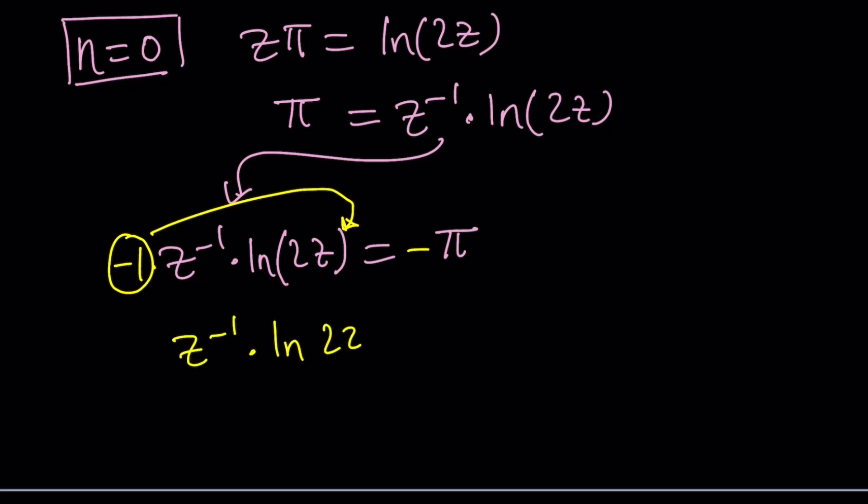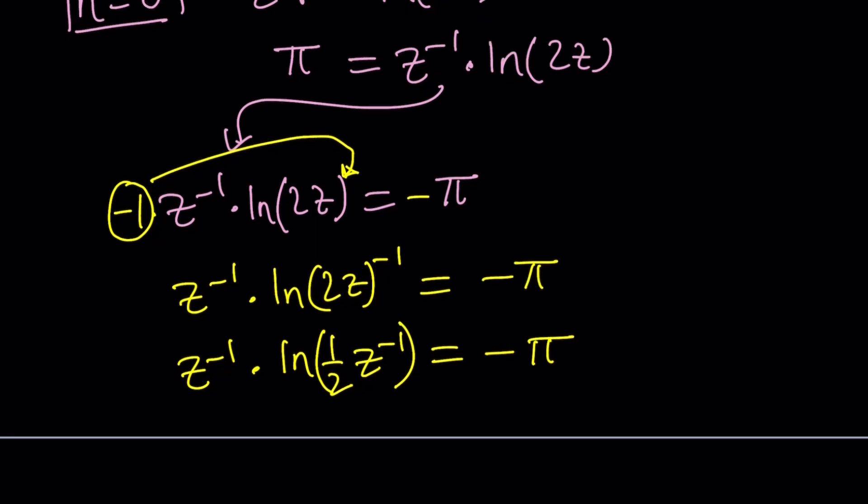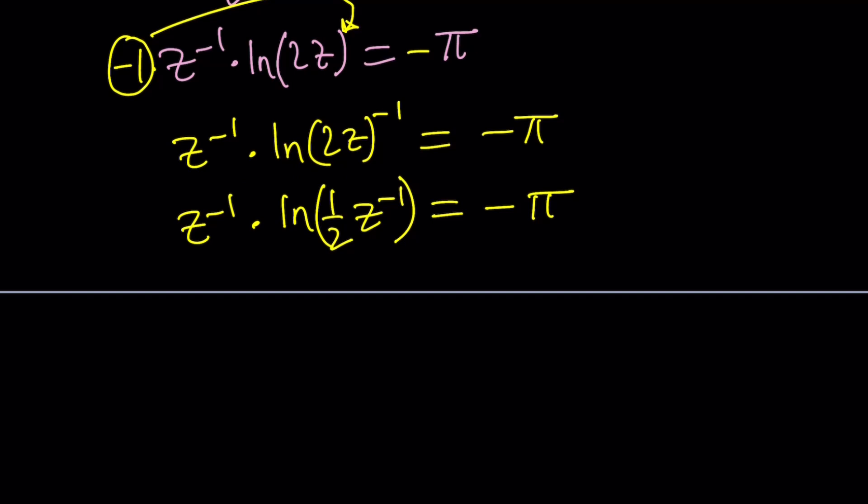Why? Because if you raise 2z to the power of negative 1, what are you getting? You're getting 2 to the power of negative 1 times z to the power of negative 1. 2 to the power of negative 1 is 1/2. z to the power of negative 1 is z to the power of negative 1. That's just what it is. And we have negative π on the right-hand side from multiplying by negative 1. Awesome. So far, so good.